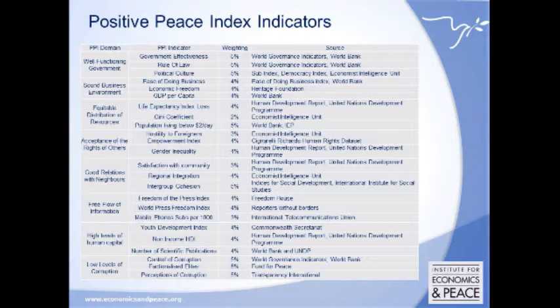A key point about this framework is that these factors are interrelated. A deficit in one pillar has the potential to undermine other pillars. Causality can go both ways, and it depends on the country context as to which factors will be more important. We then built a measure from this framework called the Positive Peace Index — 24 indicators empirically derived by their correlation to the GPI — a multidimensional measure of institutional capacity that counts both formal and informal institutions, measuring the things we want rather than the things we don't want.